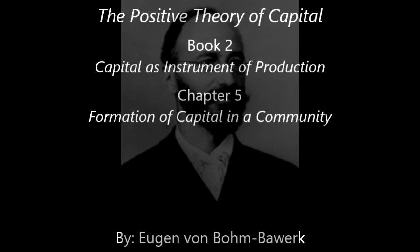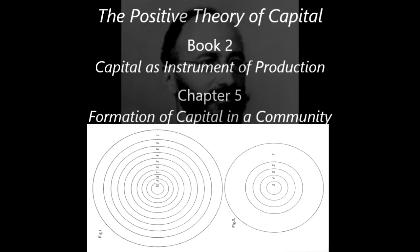Considered with reference to the varying distance at which intermediate products lie from the goal of consumption, the total mass of capital divides itself into a number of annual classes or stages of maturity, which may be very appropriately pictured by a diagram of concentric annual circles. The outermost circle in Figure 1 embraces those goods which will be transformed into goods ready for consumption within the coming year, the second circle represents those goods which will ripen into consumption goods in the year after, the third circle those which will be ready the year after that, and so on.